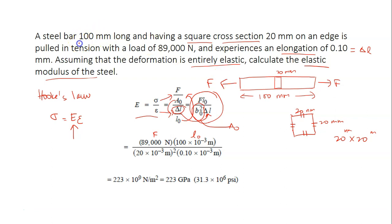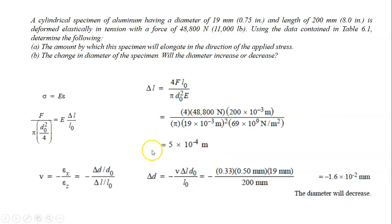And this is your A₀. And this is your delta L, which is 0.1 mm. Solving this, you will get 223 gigapascal.